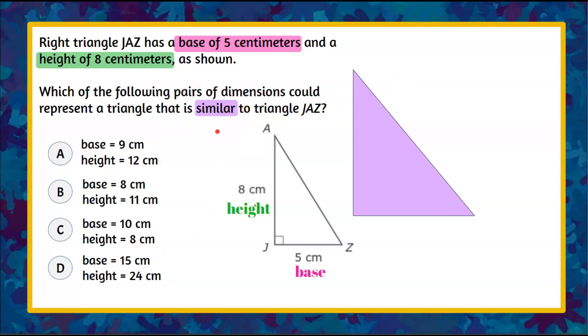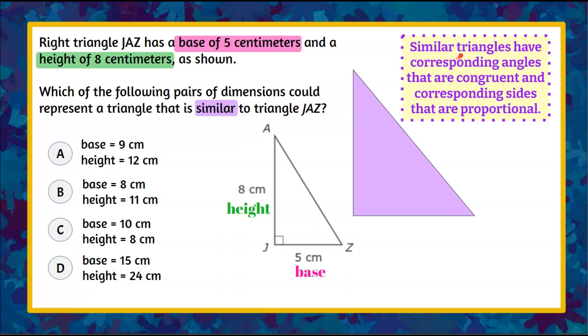We got to understand our definition of similar first. So when we say similar, similar triangles have corresponding angles that are congruent and corresponding sides that are proportional.